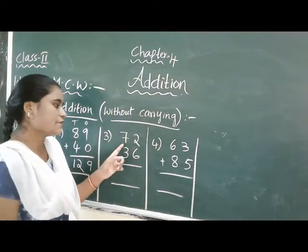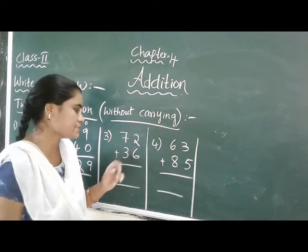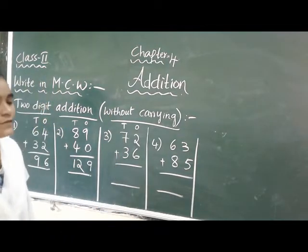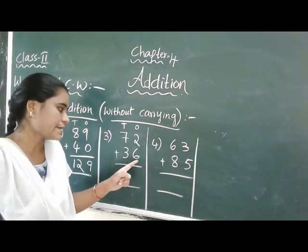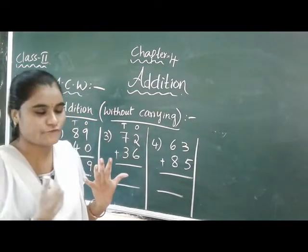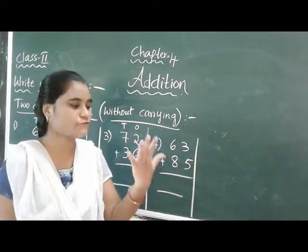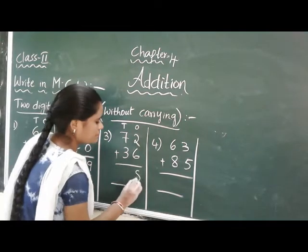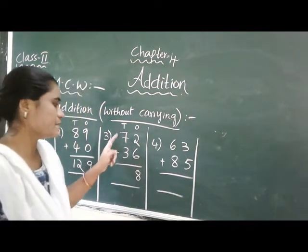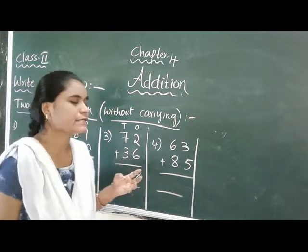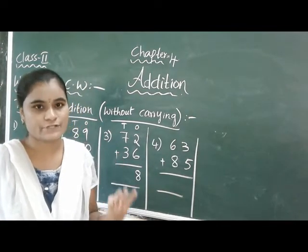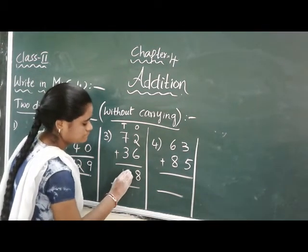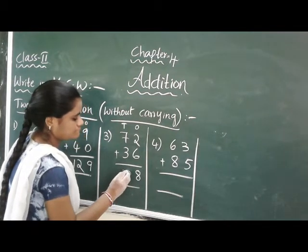See: 72 plus 36. Write the place values - ones place and tens place. Ones place: 2 in the mind, take 6 fingers, 2 after 3, 4, 5, 6, 7, 8 - that gives 8. Tens place: 7 in the mind, take 3 fingers, 7 after 8, 9, 10 - that gives 10. Answer is 108.